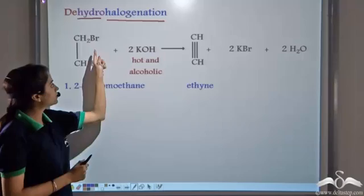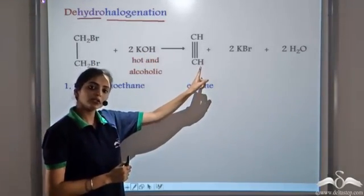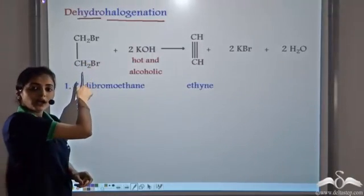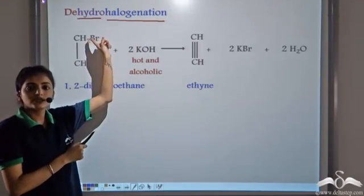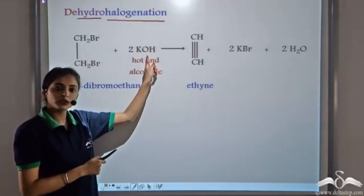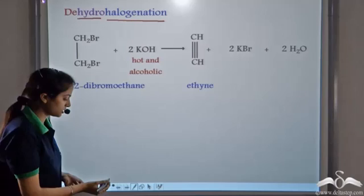The bromine in this case goes with potassium. It forms KBr, two molecules of KBr, and at the same time the hydrogen atoms are removed. Since it is dehydrohalogenation, the hydrogen atoms react with OH to form two molecules of water. Now let's see how this reaction is taking place.